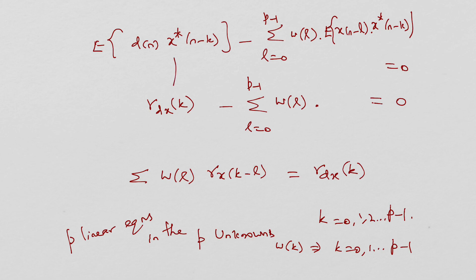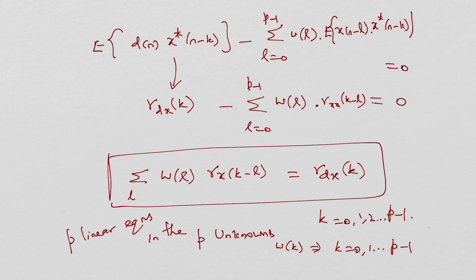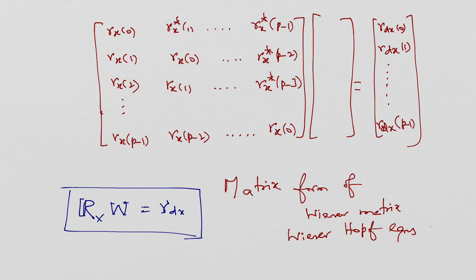Rearranging, we obtain the Wiener-Hopf equation: the sum over l of w(l) times r_xx(k minus l) equals r_dx(k), for k equal to zero, one, two, up to p minus one. This forms a set of p linear equations. For every value of k, we get a linear equation with p unknowns: w(0), w(1), w(2), up to w(p minus 1). This system can be expressed in matrix format, with the autocorrelation matrix R_xx of size p by p.